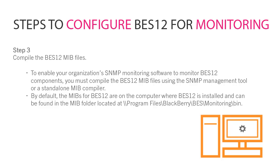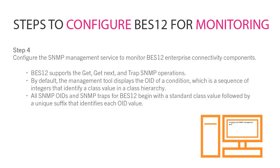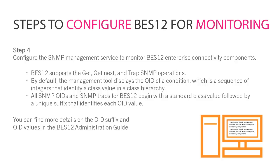By default, the MIBs for BES-12 are on the computer where BES-12 is installed and can be found in the MIB folder located at Program Files, BlackBerry, BES, Monitoring, BIN. Step 4: Configure the SNMP management service to monitor BES-12 enterprise connectivity components. BES-12 supports the GET, GET-NEXT, and TRAP SNMP operations. By default, the management tool displays the OID of a condition, which is a sequence of integers that identify a class value in a class hierarchy. All SNMP OIDs and SNMP traps for BES-12 begin with a standard class value followed by a unique suffix that identifies each OID value. You can find more details on the OID suffix and OID values in the BES-12 Administration Guide.